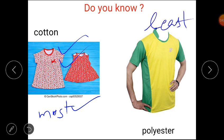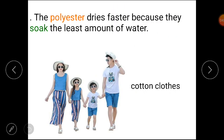So we can say natural fibers soak more water than artificial fibers. Polyester dries faster because it soaks the least amount of water — it absorbs very little water.